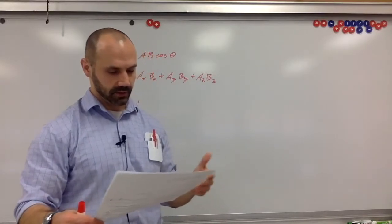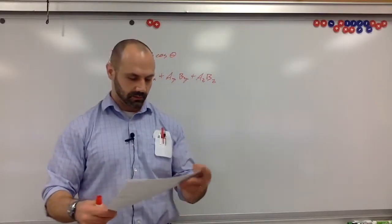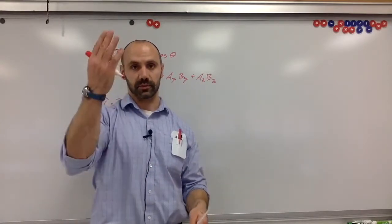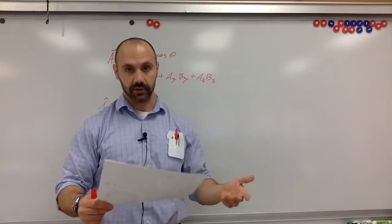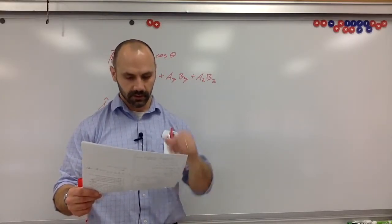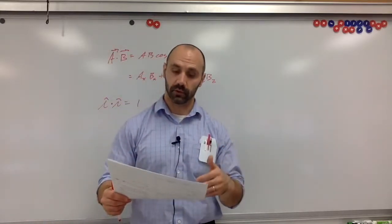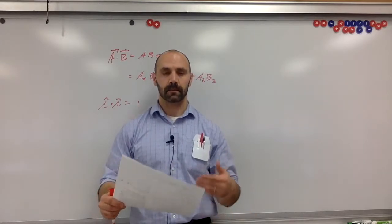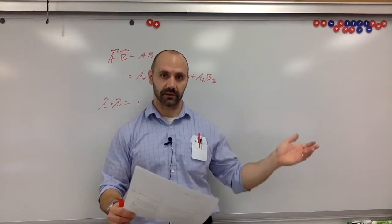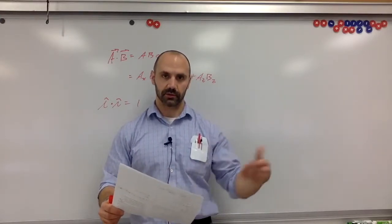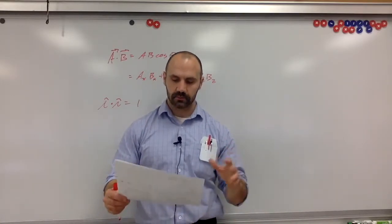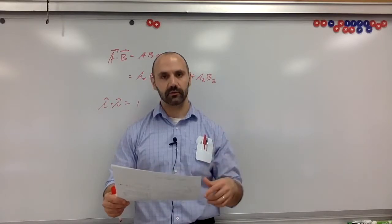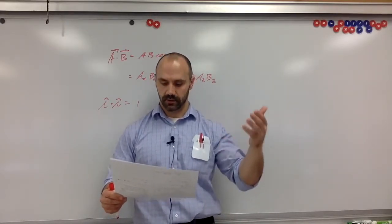The work a force does on an object depends on the angle between the force and displacement. For example, the work done by the normal force is zero because the normal force pushes up but the displacement is sideways. The work done by gravity is zero if displacement is horizontal. If friction is present, the work done by friction is Ff · d · cos(180°) — friction takes energy out of the system. In general: normal force does zero work, friction does negative work, and gravity does negative work if displacement is upward but positive work if displacement is downward.